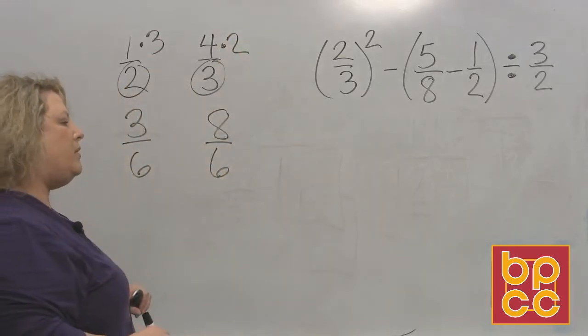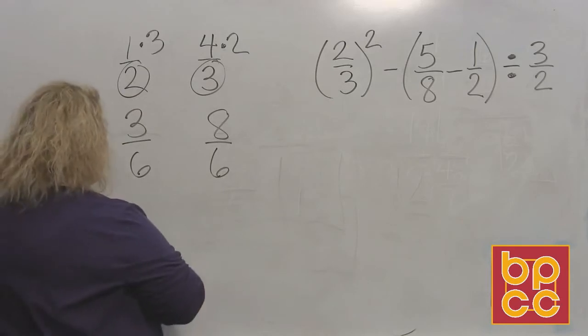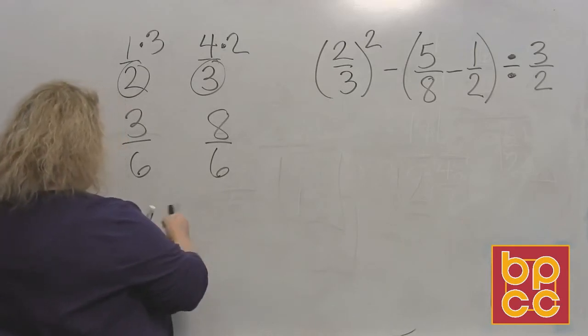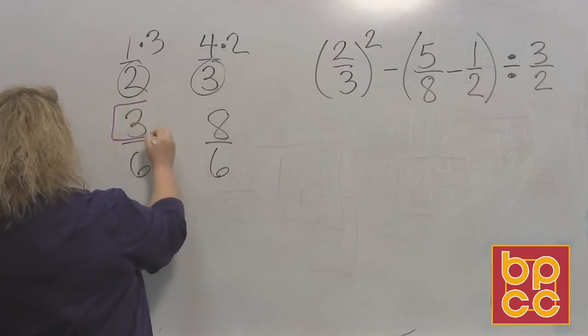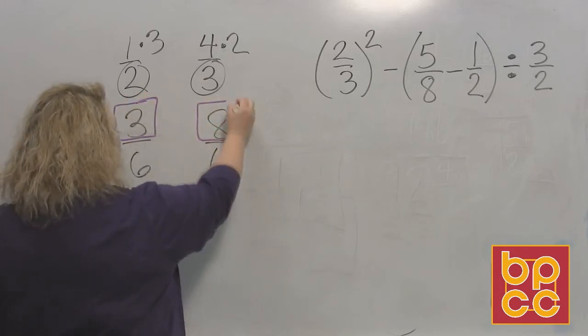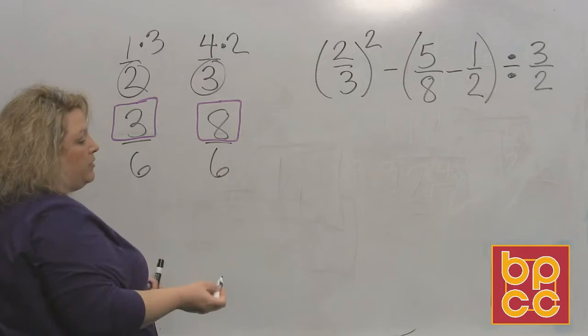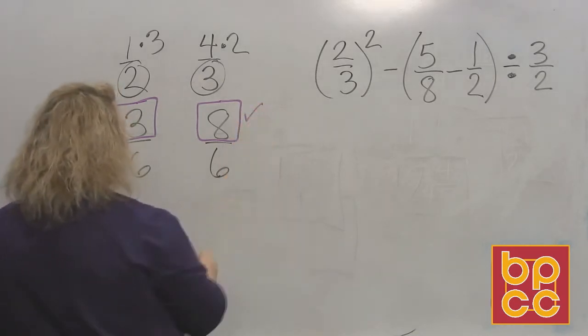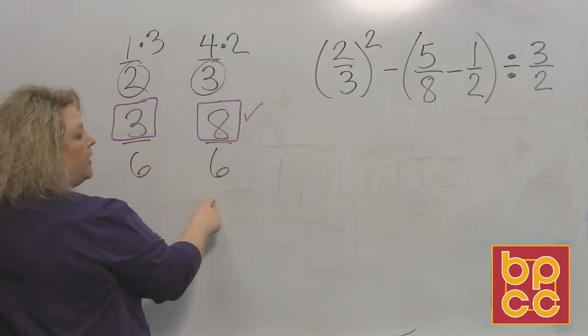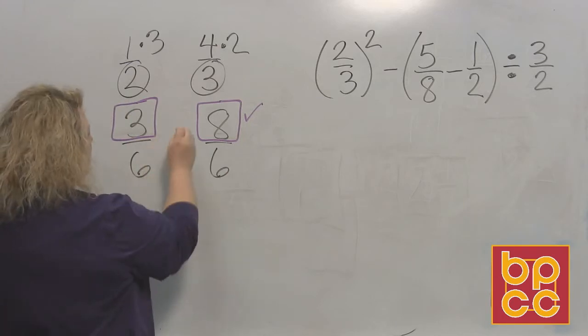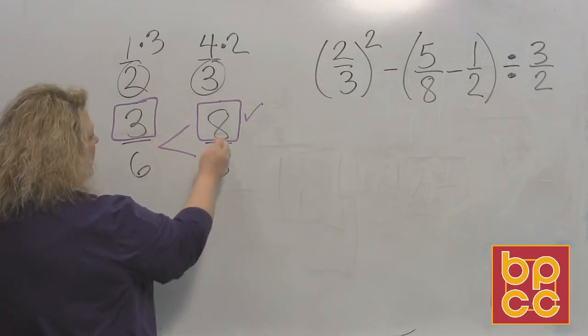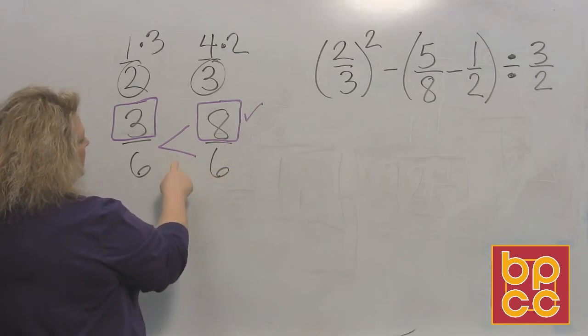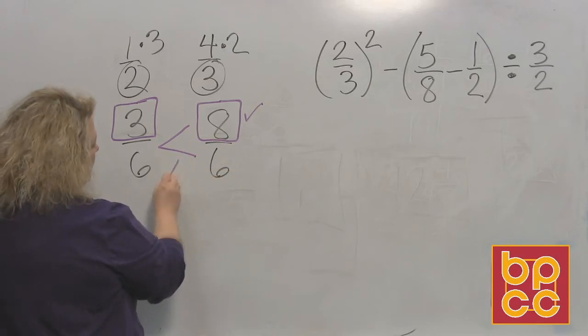Once you make your denominators the same, then all you're concerned with are the numerators. So when I look at the numerators, I have a 3 and I have an 8. So you ask yourself, which one's bigger, the 3 or the 8? The 8 is bigger. So therefore, reading from left to right, three-sixths is less than eight-sixths. And when the symbol points to the left, this is less than.